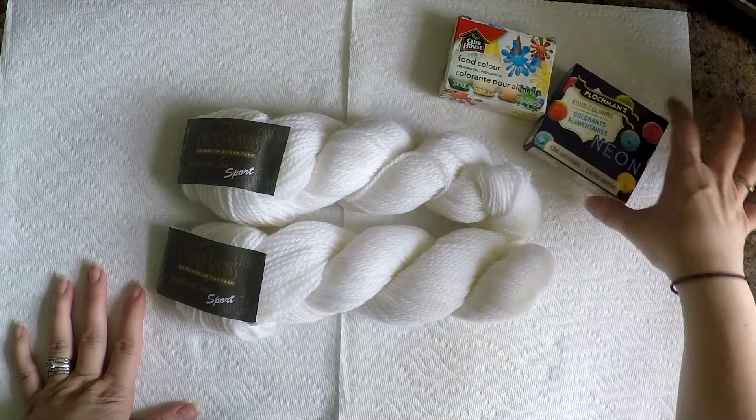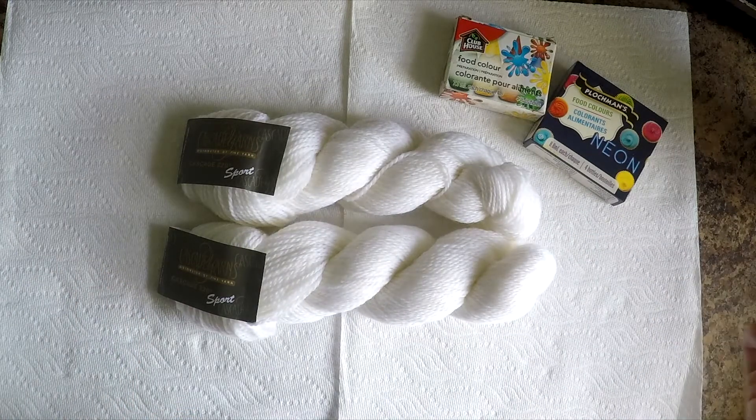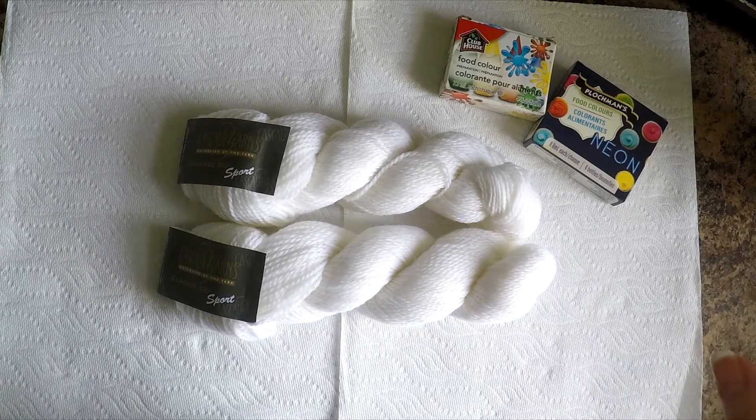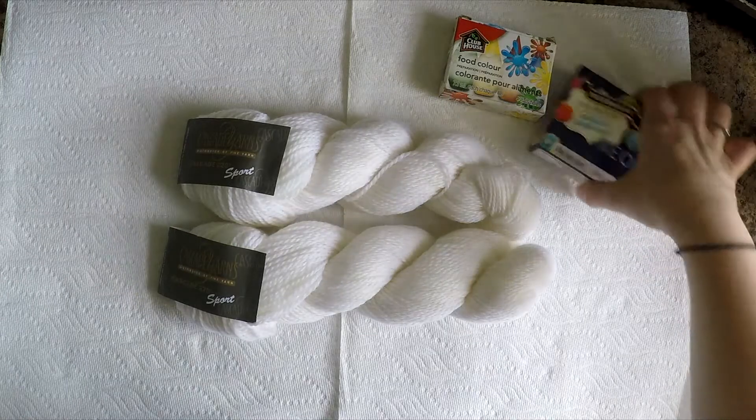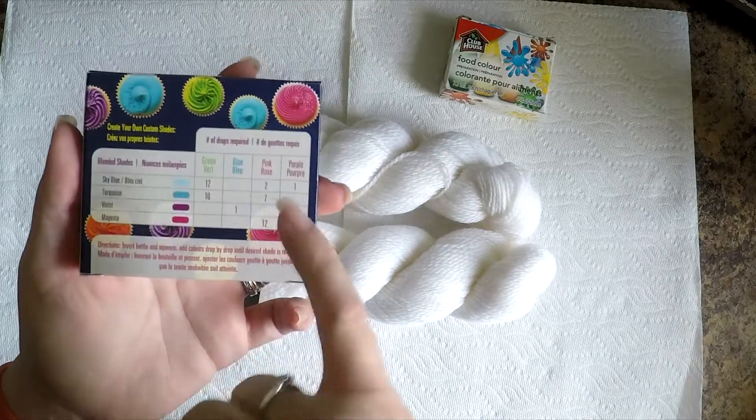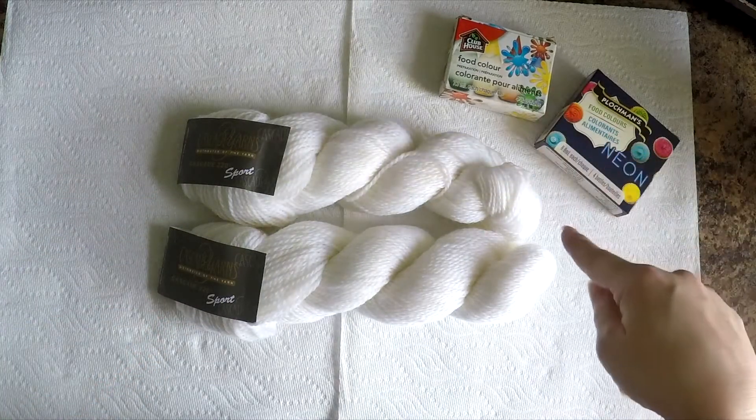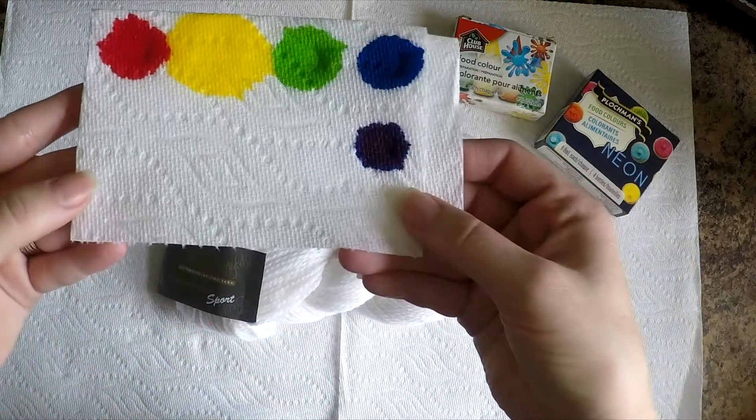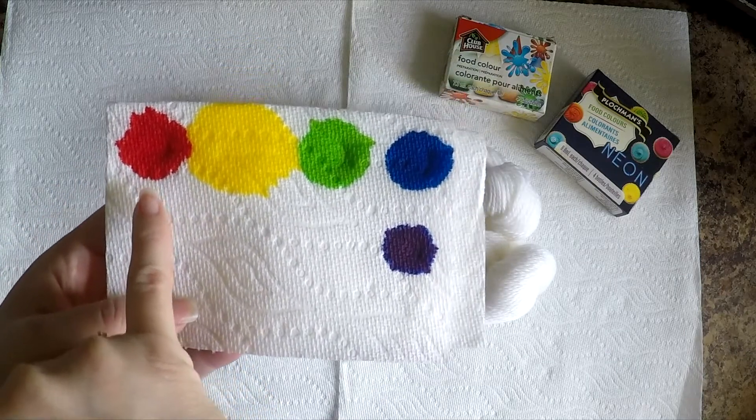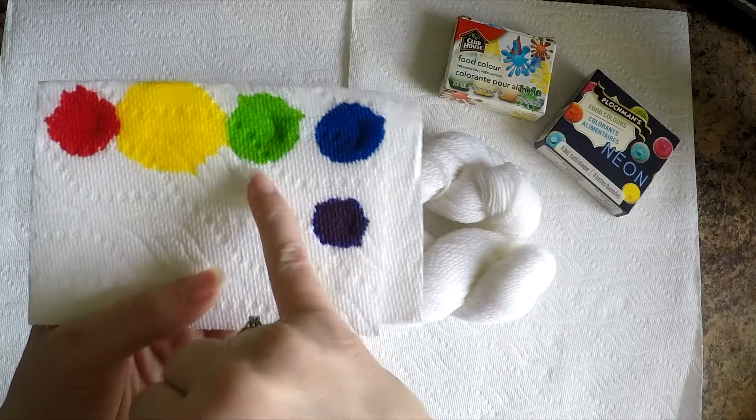I really wanted to do neon rainbow, but I couldn't find neon food coloring. I'm not going to play with the fancy stuff for my first time, so I thought let's just do food coloring. This is as close as I could get. I found at Walmart it only came in green, blue, pink, and purple. Then I dug through and found a super old box of Clubhouse food coloring and grabbed yellow. The yellow is actually quite neon, the pink is very red.